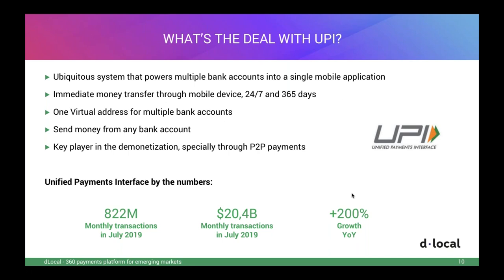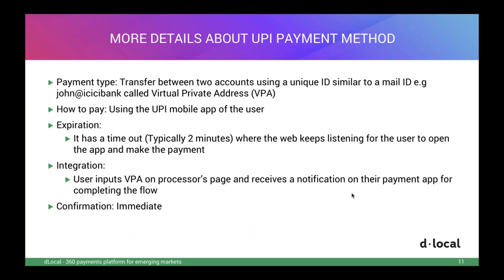UPI recorded more than 100 million transactions in July 2019, with 20 billion TPV in the same month. UPI has already overtaken debit card transactions by both volume and value according to the RBI. We are seeing a shift where banks and wallets are starting to encourage their users to go through the UPI system, which gives flexibility and ease to users and financial institutions alike. It's a huge player and really relevant for e-commerce in India — it's quite a must.